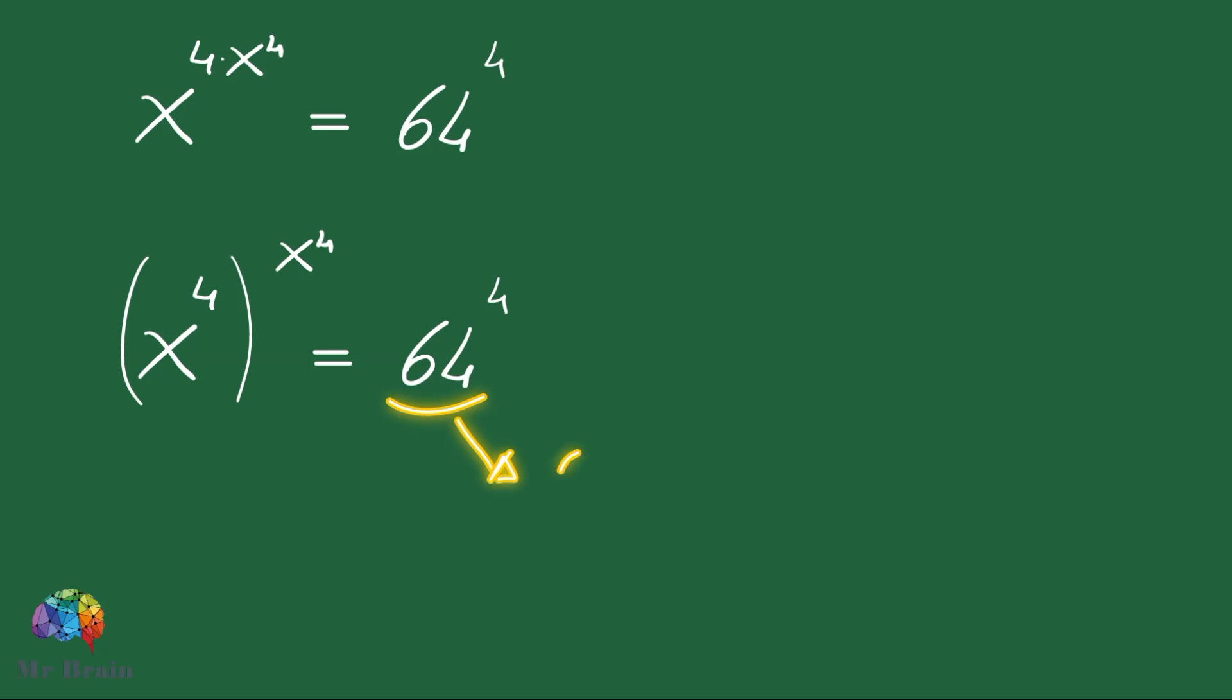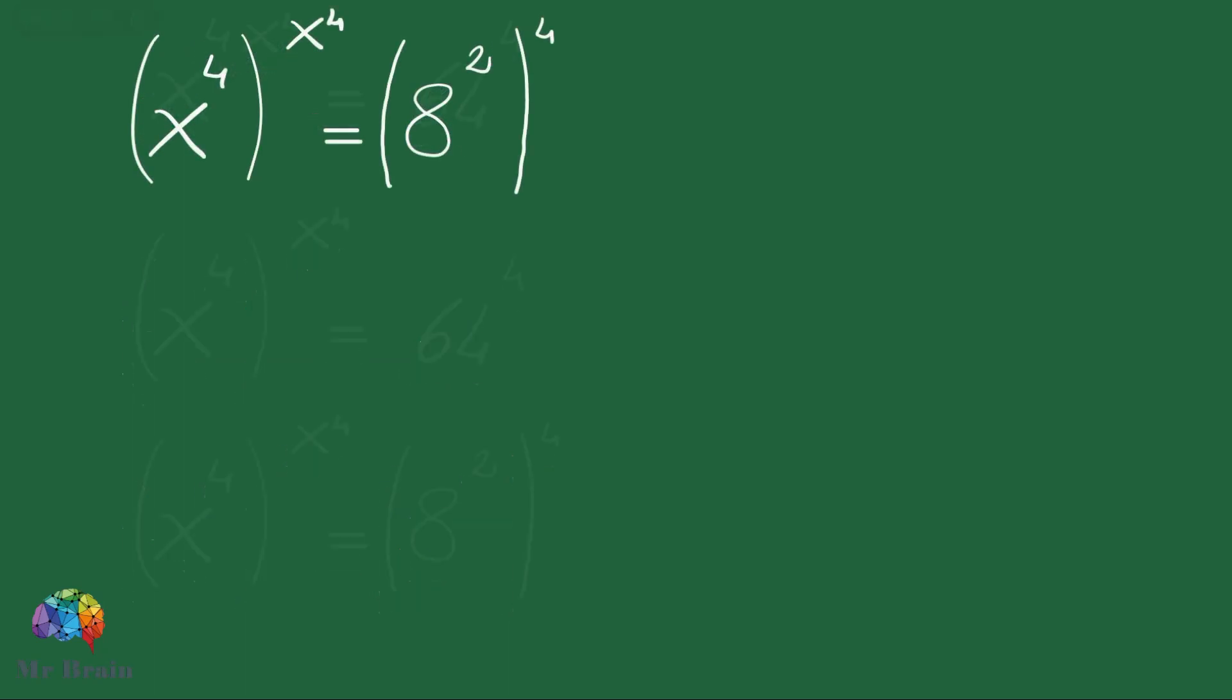We will write 64 as 8 squared. We apply the property of a power of a power to the left-hand side and multiply the exponents.